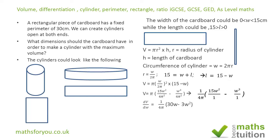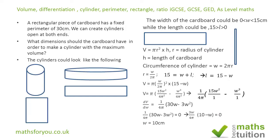If we then differentiate V with respect to w and set the derivative equal to zero, we simplify and end up with 10 − w = 0, giving w = 10. Because w = 10 and w + l = 15, the length is l = 5. This gives us a width-to-length ratio of 10:5, which is 2:1.